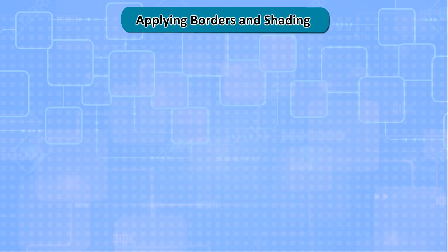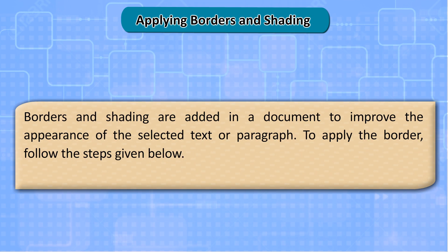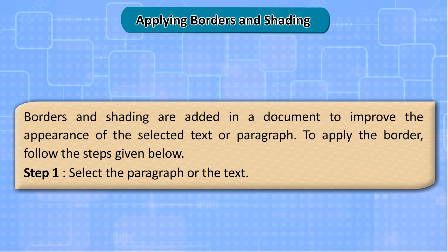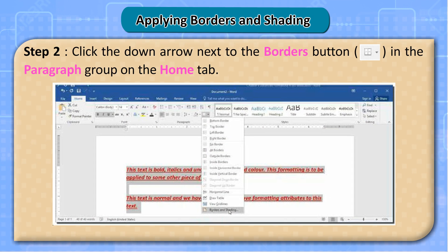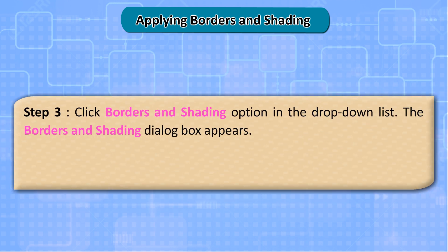Applying Borders and Shading. Borders and shading are added in a document to improve the appearance of the selected text or paragraph. To apply the border, follow the steps given below. Step 1: Select the paragraph or the text. Step 2: Click the down arrow next to the Borders button in the Paragraph group on the Home tab. Step 3: Click the Borders and Shading option in the drop-down list.